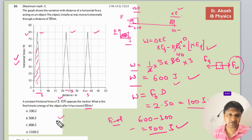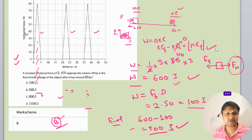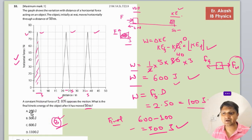And the mark scheme says that B option is the right option. So what we have done in this question: we have calculated the work done by the horizontal force, and then we have calculated the work done by the frictional force.